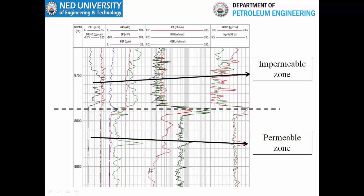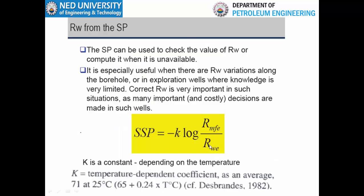To estimate Rw, we need SSP, K (a constant), and RMFe, which is the resistivity of the mud filtrate. RMFe is estimated in the lab from the mud filtrate. SSP is read from the log, K is a constant, and by this equation we can calculate Rw.